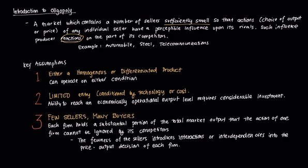There are three main assumptions about oligopolies. The first is that the market can operate with either homogeneous or differentiated products. The oligopoly can exist in a market where all firms sell the same exact good — such as telecommunications, where the service isn't that differentiated — or they could operate in a differentiated product market, such as smartphones and tablets, where feature sets and particular functions may vary across different products.